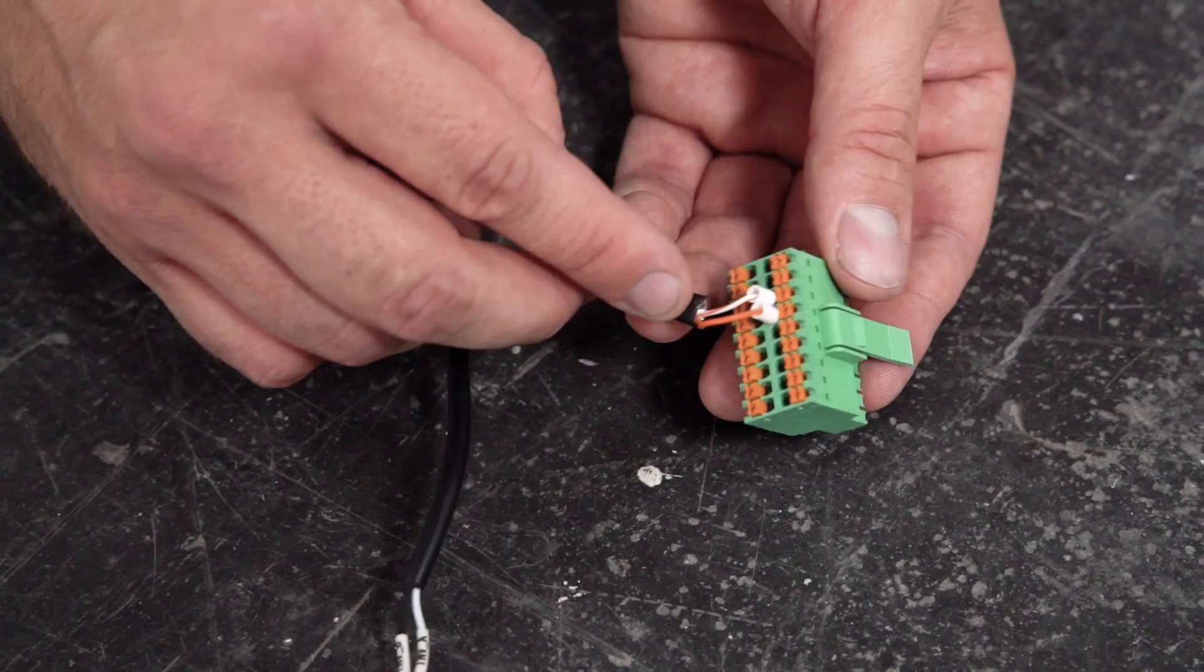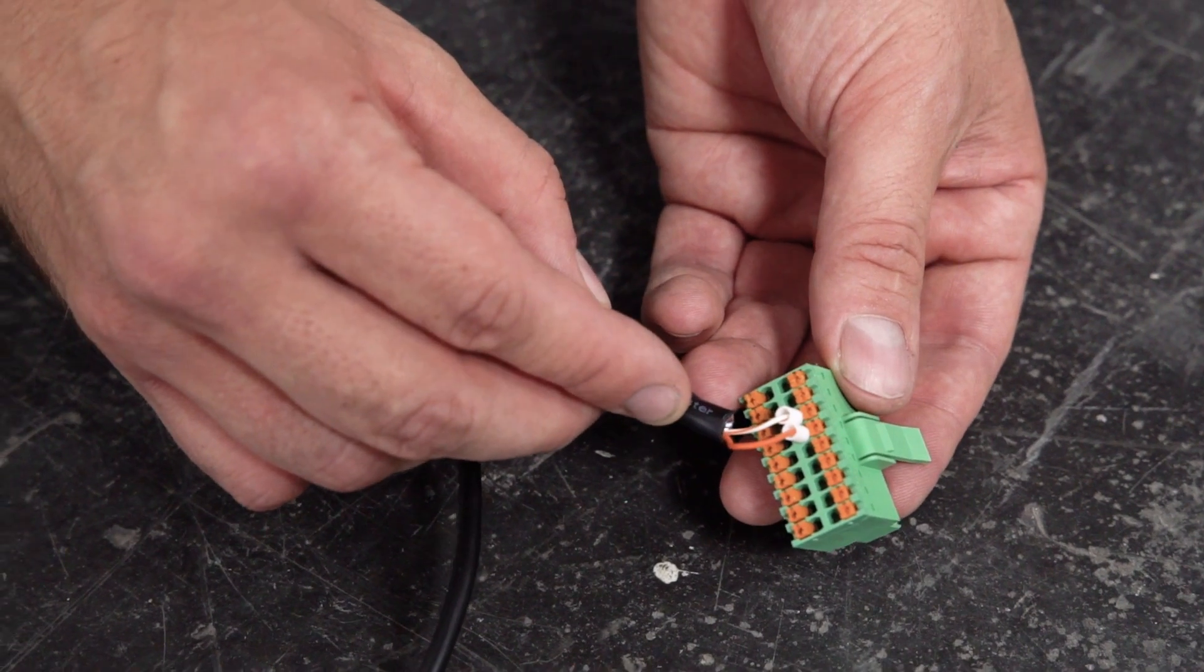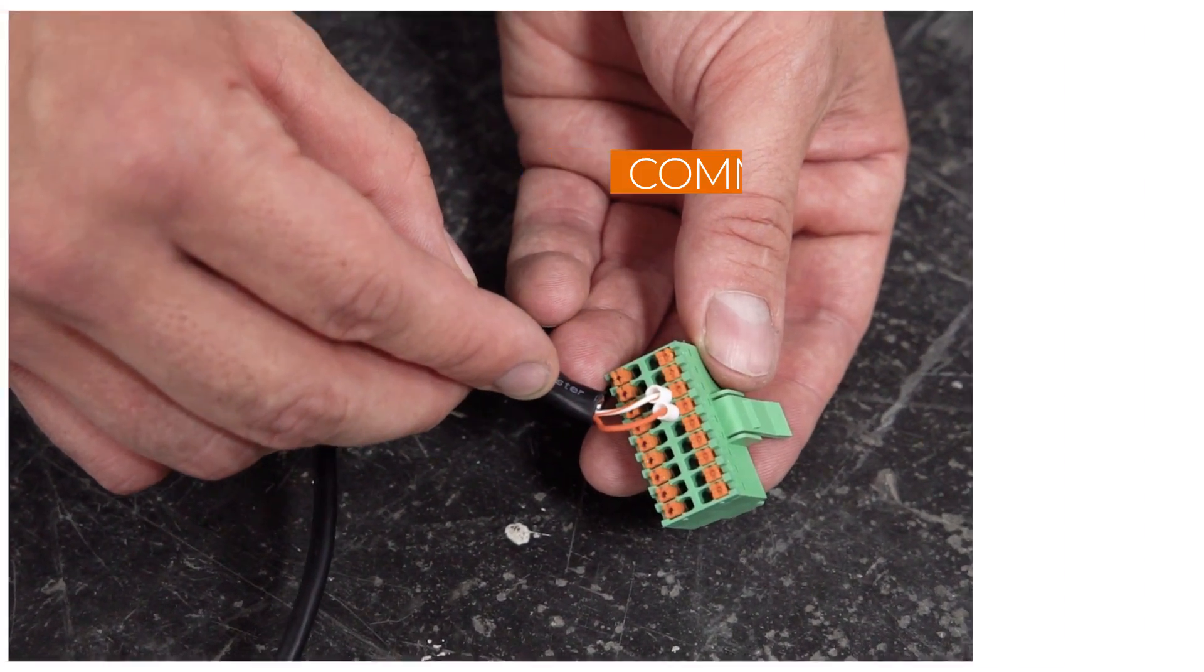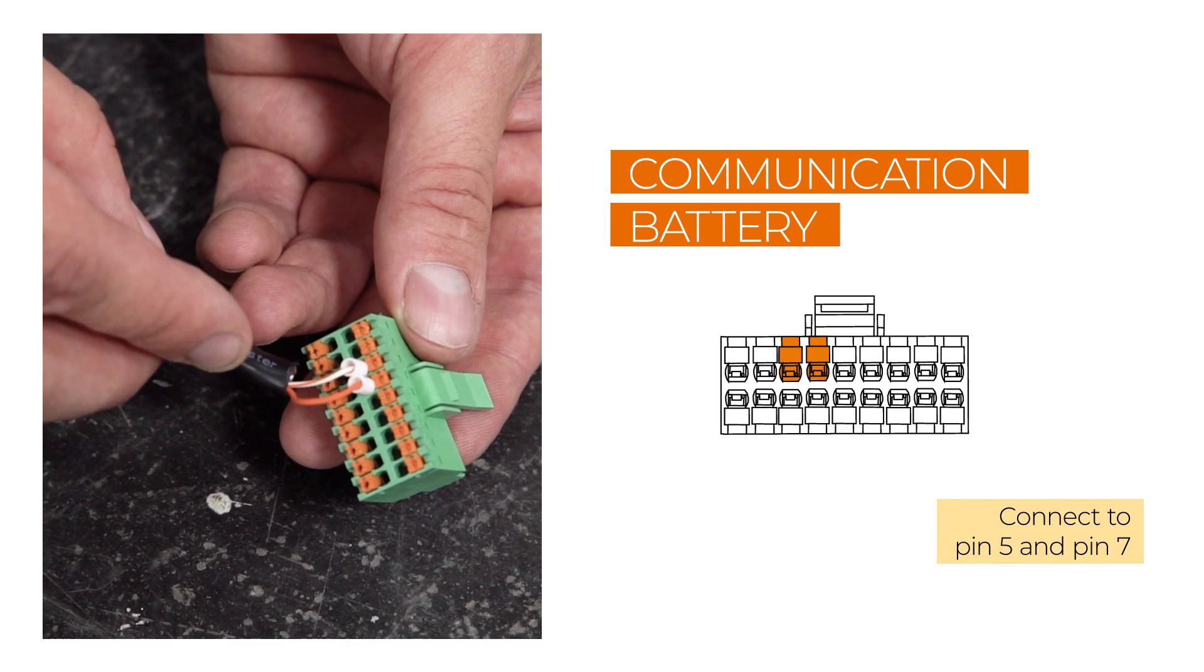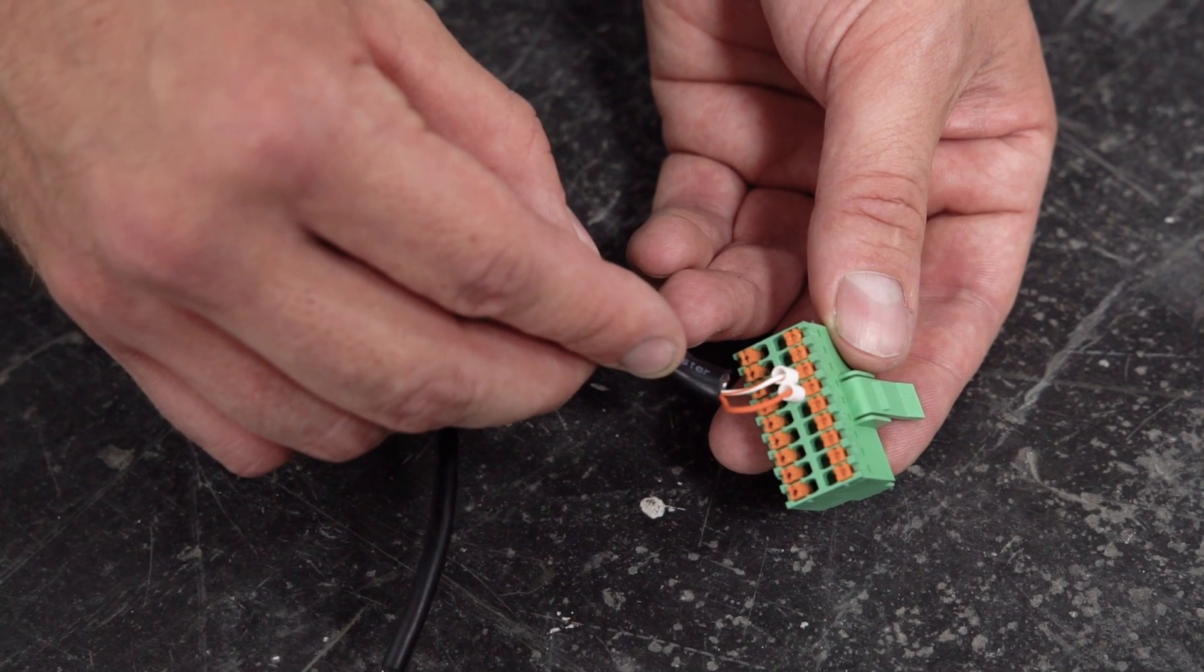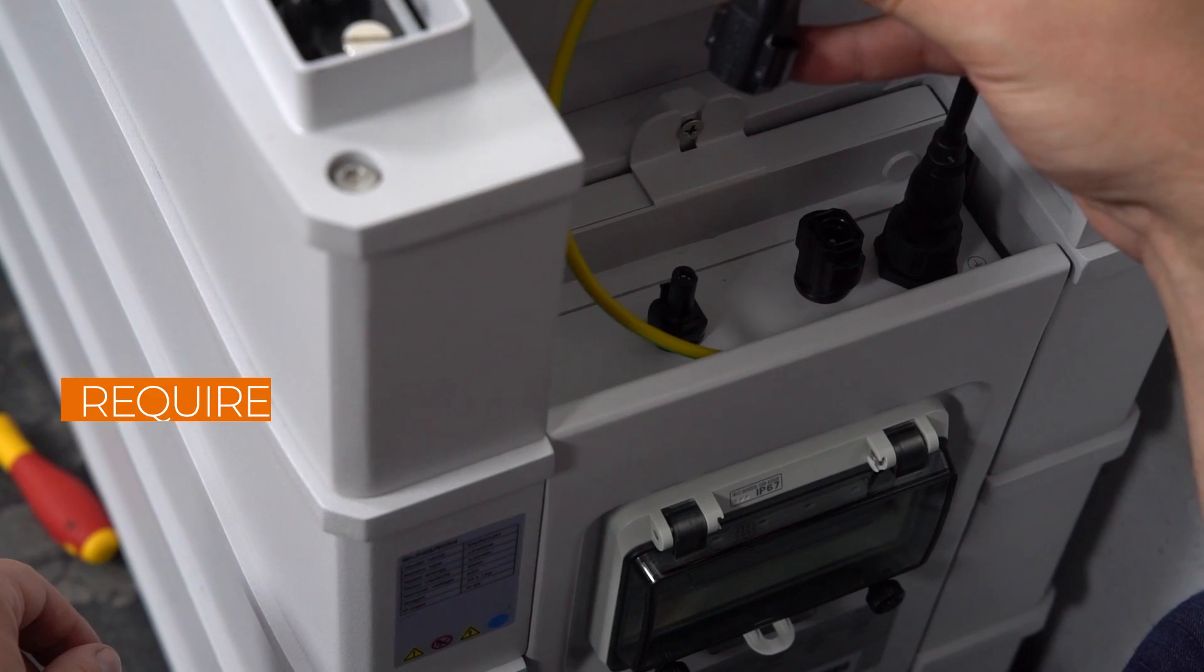Connect the white orange cable to pin 5 and the orange cable to pin 7. Connect the battery power cables to the P minus and P plus port on the battery side.